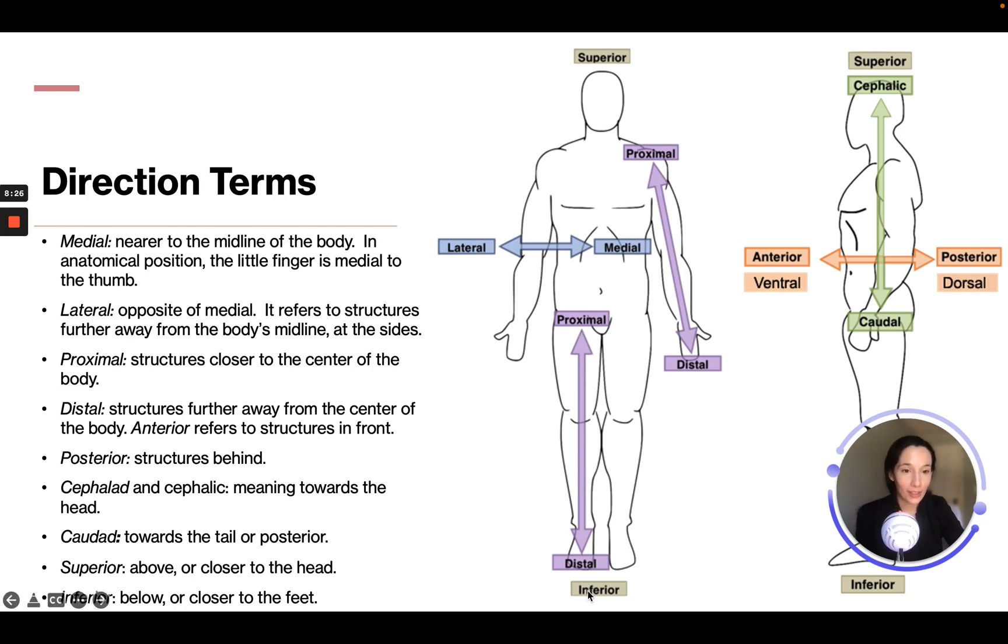Then we have anterior—refers to structures in the front. We had talked about that in the last slide, and posterior is to the back. Cephalad or cephalic means towards the head. Caudad is towards the tail or posterior. And then we have superior, which is above or close to the head, and then we have inferior, down at the feet.